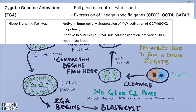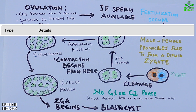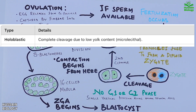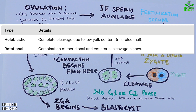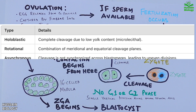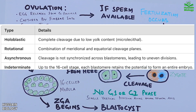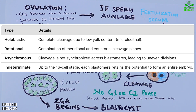Now let's look at what type of cleavage we get in humans. Human cleavage is characterized by being holoblastic, meaning the entire zygote divides completely due to the low yolk content. The division pattern is rotational, where the first division is meridional and the second is a mix of meridional and equatorial. Cleavage occurs asynchronously, so not all cells divide simultaneously, resulting in an uneven number of blastomeres at times. Up to the 16-cell stage, each blastomere retains the potential to form a complete embryo, highlighting the totipotent nature of the cells.